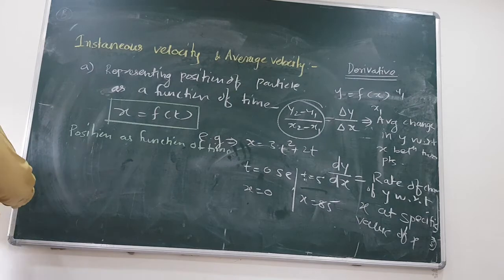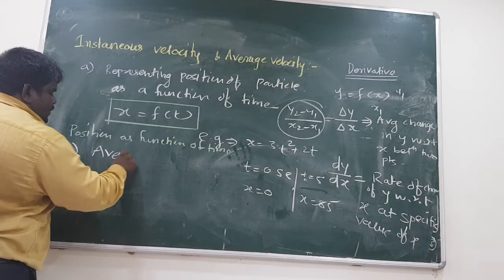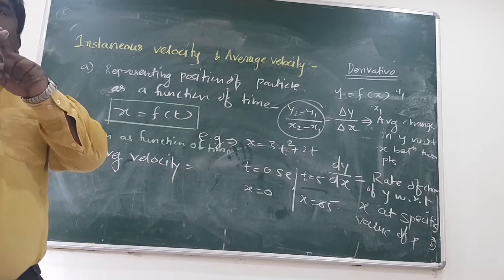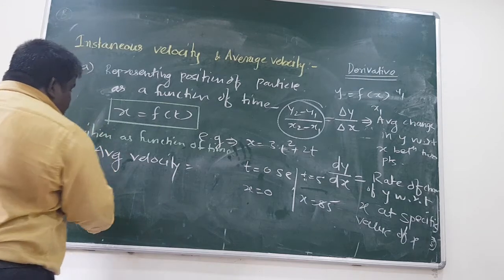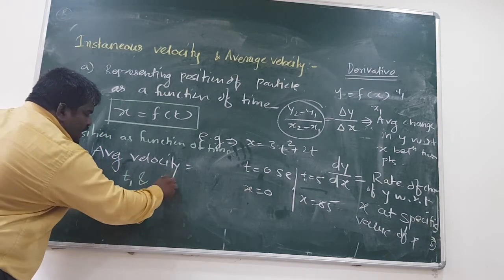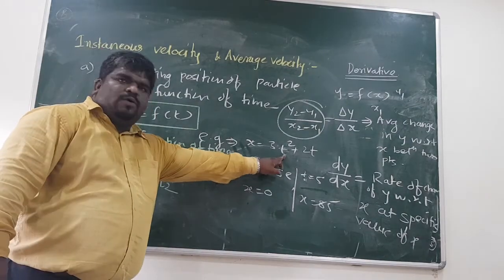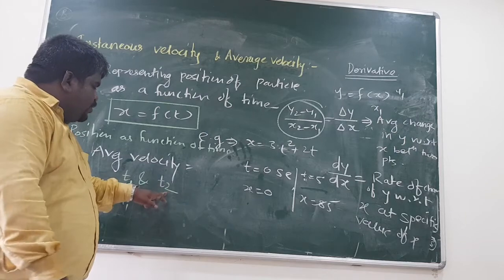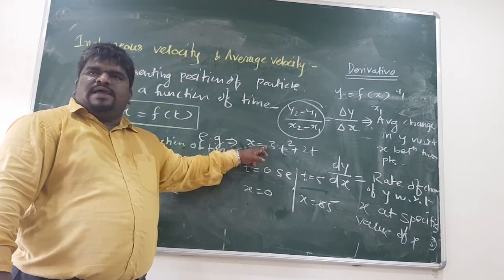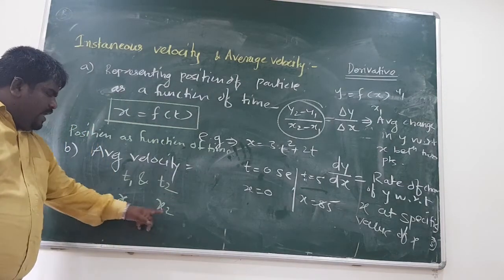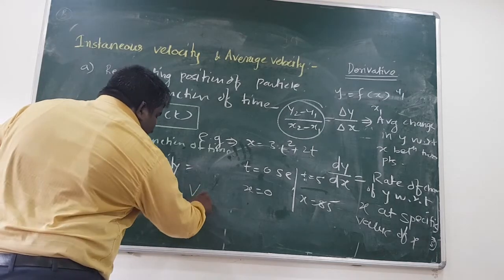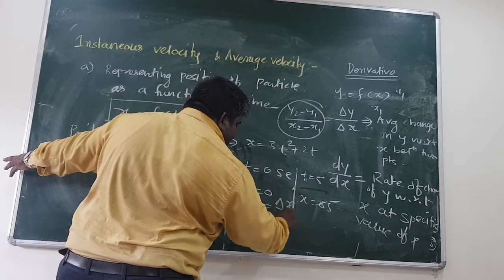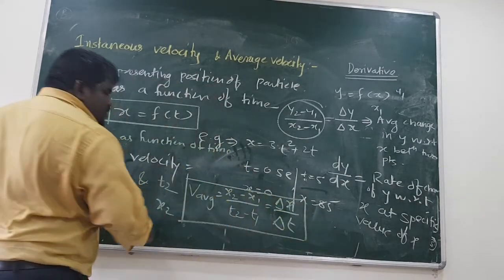Now if this is the scenario, how will we find out average velocity? To find average velocity, I need two points. Average velocity is calculated between two time intervals t1 and t2. When I substitute t equal to t1, I get some value of x — say x1; substitute t equal to t2, I get x2. Then v average equals x2 minus x1 divided by t2 minus t1, because it is delta x by delta t.